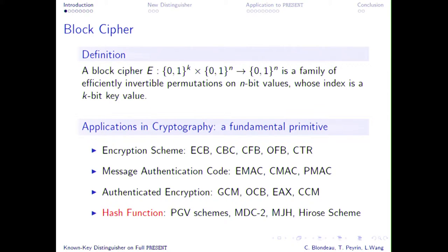A block cipher is just a family of permutations indexed by a key. Usually we want it to be efficient, otherwise it's not so useful. It's one of the most basic primitives we can have in crypto and in symmetric key crypto. We can use a block cipher to do several things. As soon as we want to do something with the block cipher, we have to embed it in a mode, because it's really a primitive — you cannot just use it by itself.